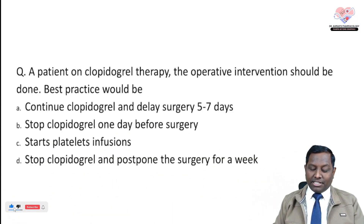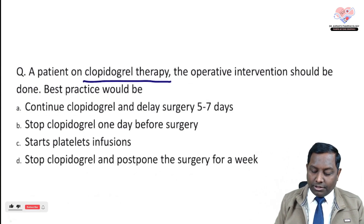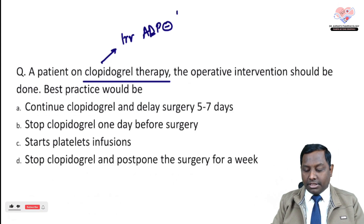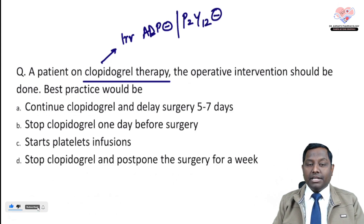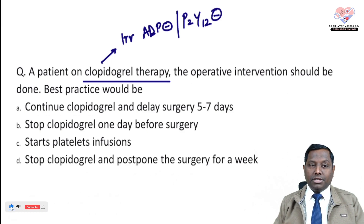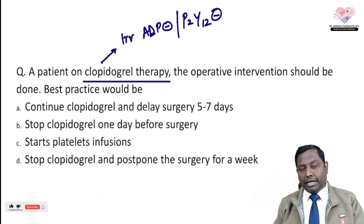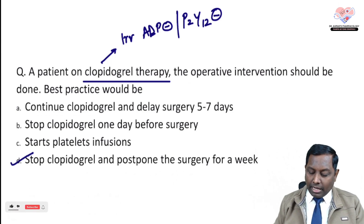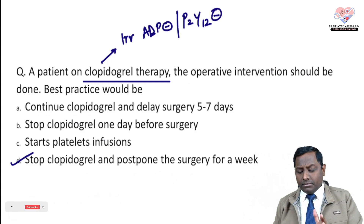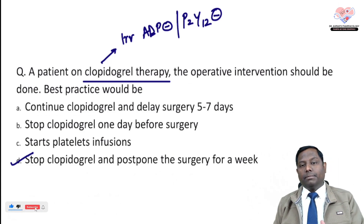The last question: a patient on clopidogrel therapy requires operative intervention. Remember, clopidogrel is an irreversible ADP inhibitor — also called a P2Y inhibitor — acting through the P2Y receptor. Whenever a patient is on clopidogrel, best practice is to stop clopidogrel, shift to a shorter-acting antiplatelet drug, and postpone surgery for at least one week. Previously, the same rule applied to aspirin, but now it is advised that surgery can proceed with appropriate blood arrangement even if the patient is on aspirin.